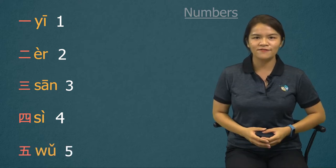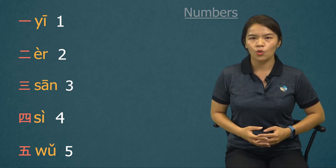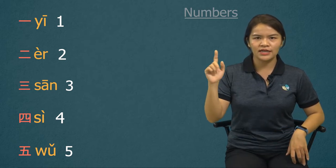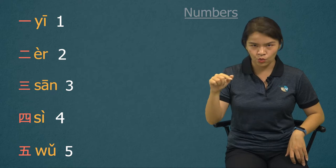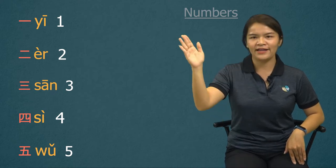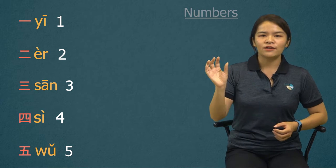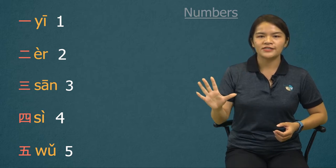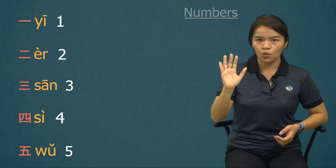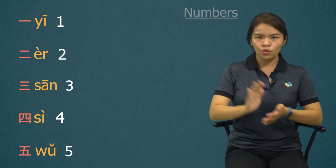Number five. 五, 五. The original tone is 五 — high, low, high again. But we just pronounce the first part during conversation. 五, 五, 五.